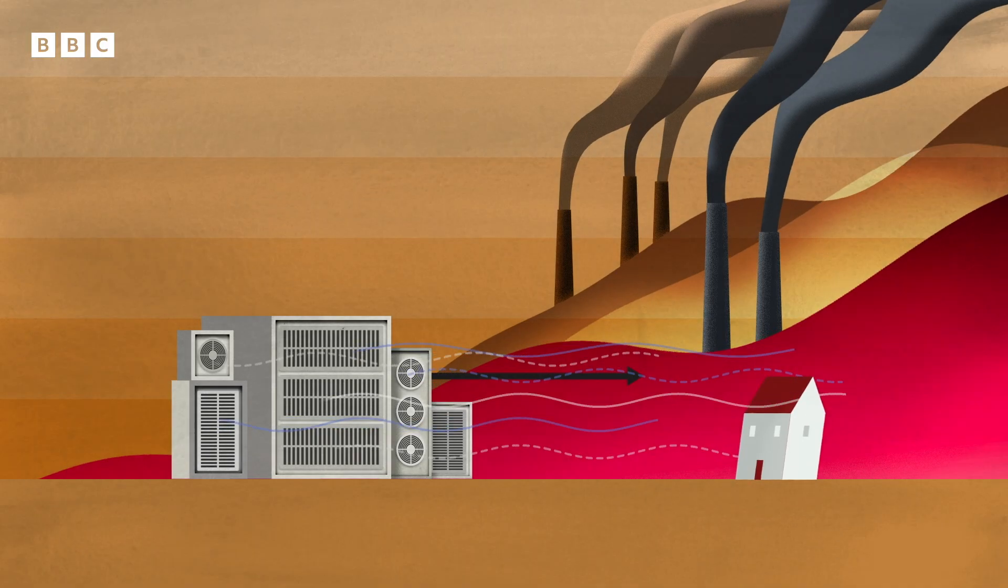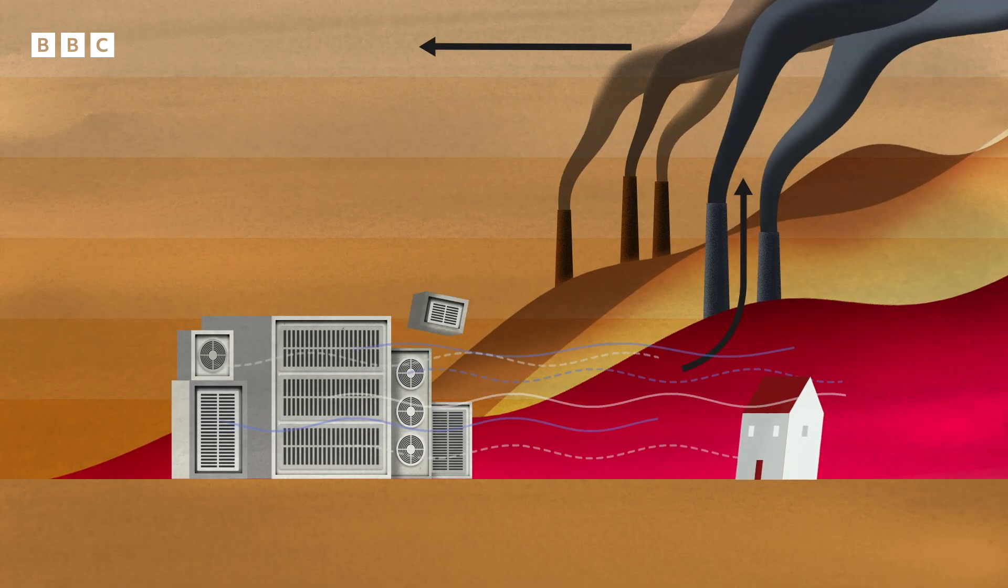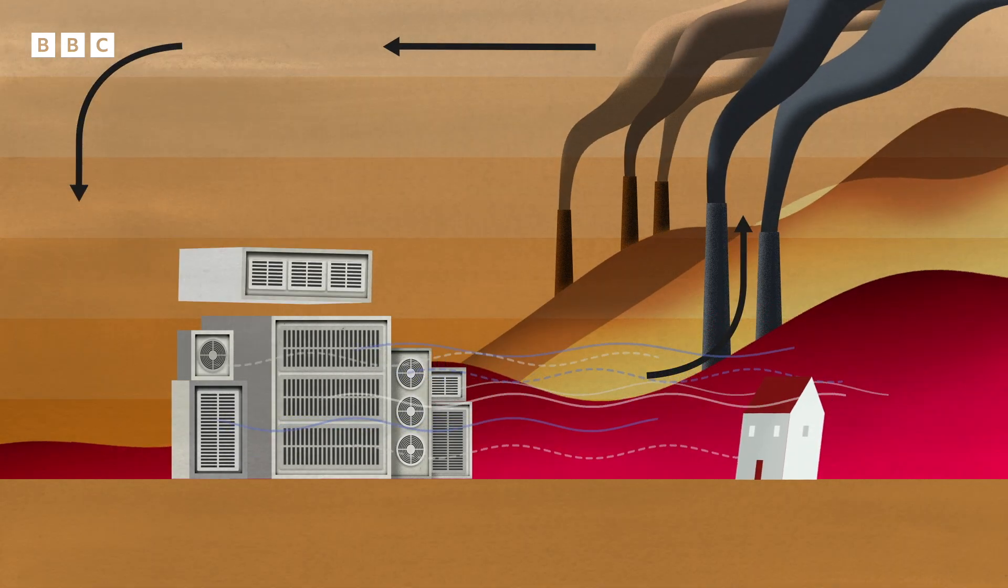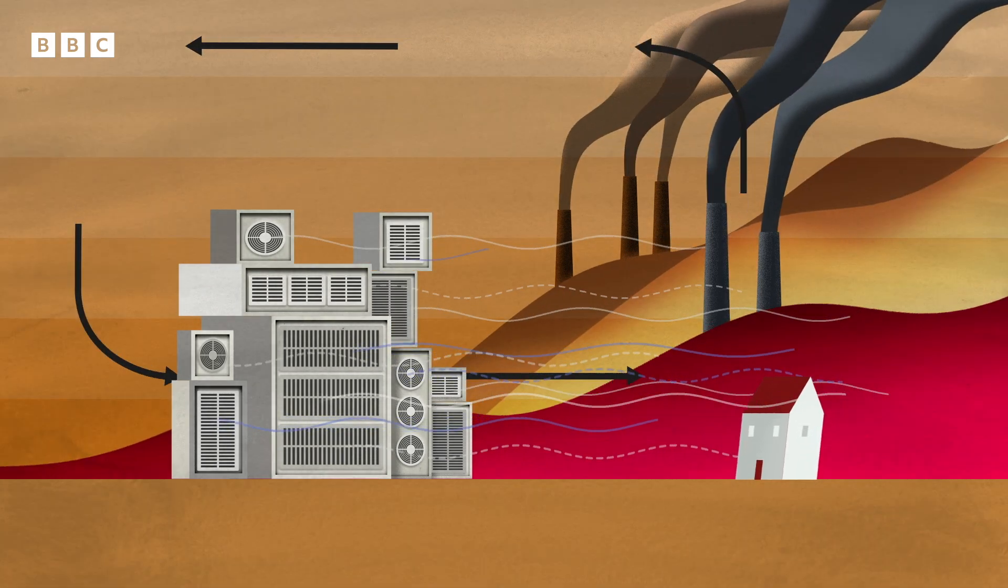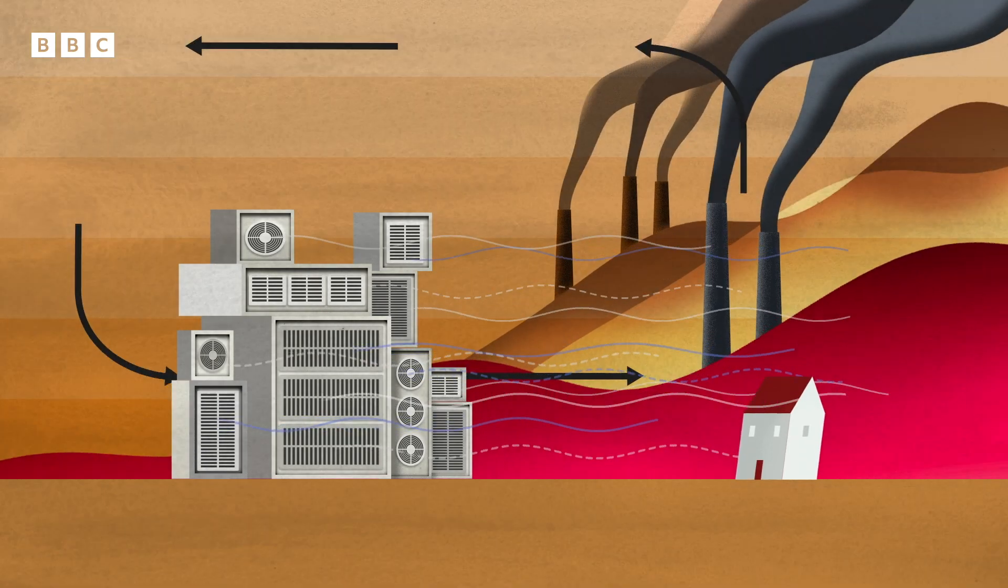This is the ever-accelerating feedback loop of air conditioning. Higher temperatures lead to more AC. More AC drives ever-higher temperatures. And while this cycle continues, people will suffer from the ill effects of extreme heat.